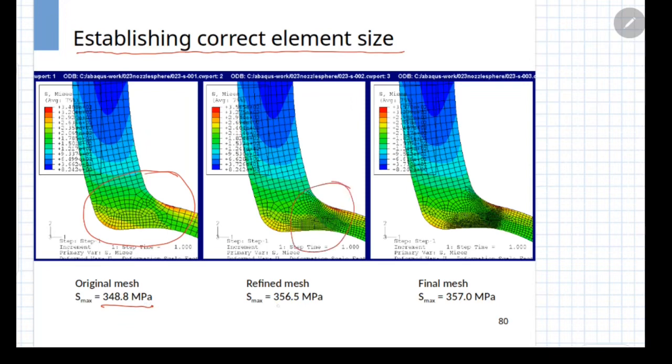By making some refinement in the mesh, the result of the peak stress improves to 356.5 MPa. And if you make further refinement, you get another value of stress. But as you can see, these two stresses are almost matching to each other as compared to the difference between first and second. The second and third are almost same. That means any mesh size between these two discretization levels is okay for doing the fatigue analysis.